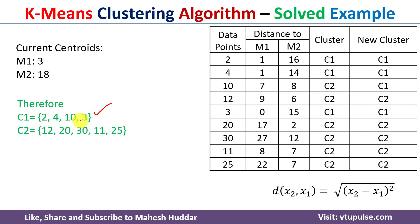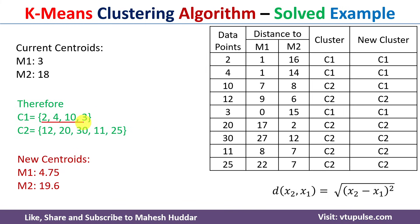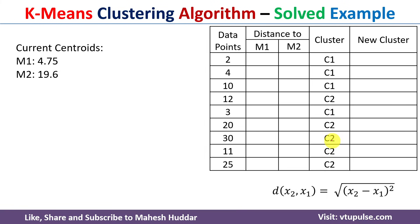Because data point 10 moved, we get new clusters: c1 now contains data points 2, 4, 10, and 3 — four data points total. c2 contains the remaining data points. We calculate new centroids: m1 = 4.75 and m2 = 19.6. For the next iteration, we copy the new cluster assignments into the current cluster assignments.